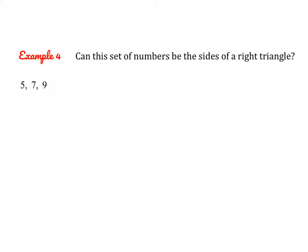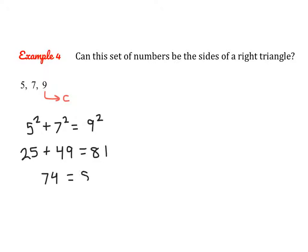Let's try another example. I look at the three sides and know that 9 must be the C value because it's the largest. The other two are A and B. So 5 squared plus 7 squared equals 9 squared. That gives us 25 plus 49 equals 81, so 74 equals 81. This is not a true statement — 74 does not equal 81. So this triangle is not a right triangle; they cannot be the sides of a right triangle because the Pythagorean Theorem did not work.